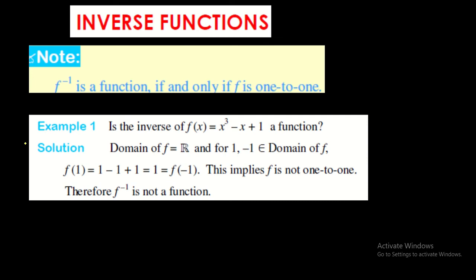Here is another example. If f(x) = x³ - x + 1, can we say the inverse is also a function? By a counter-example, we take x = 1 and x = -1 from the domain. Substituting 1 gives an outcome of 1, and substituting -1 also gives 1. That means the function is not one-to-one.